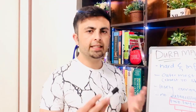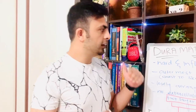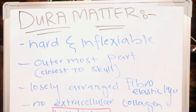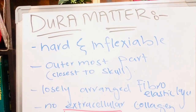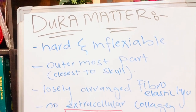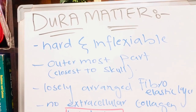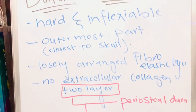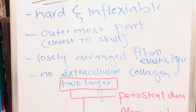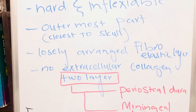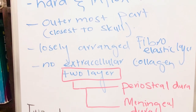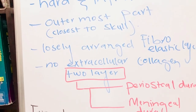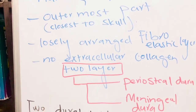Now we will discuss each layer separately. First, the outermost layer of the central nervous system — the dura mater. Its characteristics: it is hard in nature, inflexible, and it is the outermost part of the central nervous system, closest to the skull. It is made up of a loosely arranged fibroelastic layer and has no extracellular collagen, which is what makes it hard.